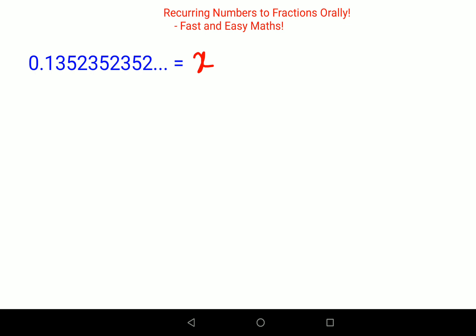I want the entire recurring part to be continued after the decimal point. So here I need to multiply your x by 10,000. So you get the answer as 1352, then you will again have 352 which is recurring.